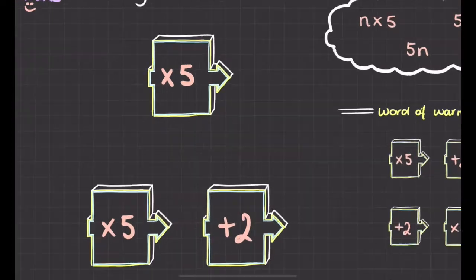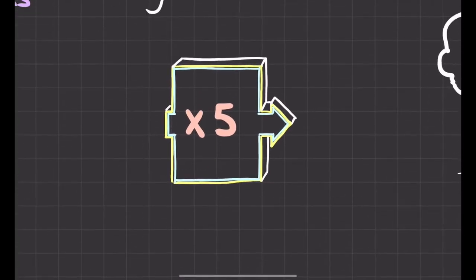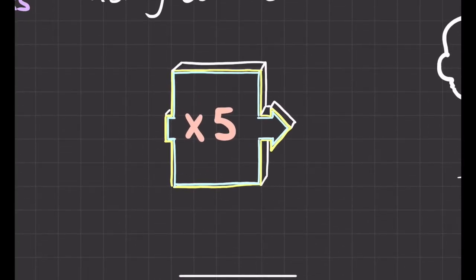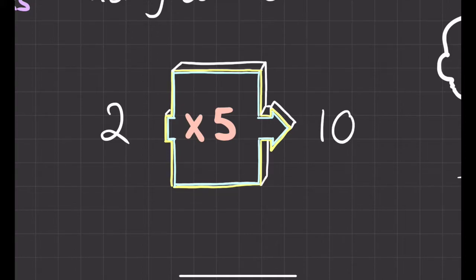So we had our function machine — here's one that multiplies numbers by five. If I put in a number like two, I times it by five and I get out an answer of ten. So I've got an input and I've got an output, and I could put in any number that I wanted to.